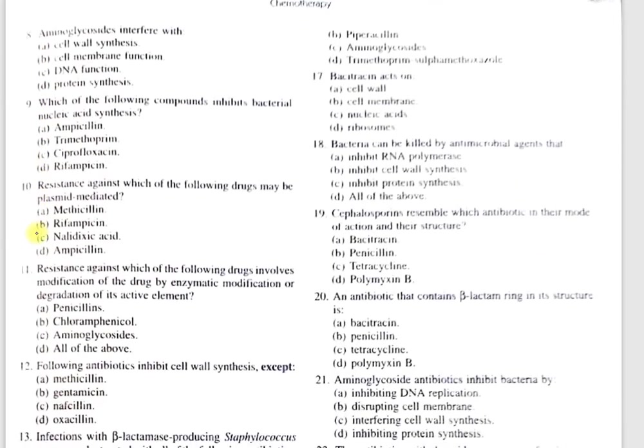Question number 8: Aminoglycosides interfere with — A, cell wall synthesis; B, cell membrane function; C, DNA function; D, protein synthesis. The correct option is D, protein synthesis. Aminoglycosides interfere with different stages of protein synthesis.